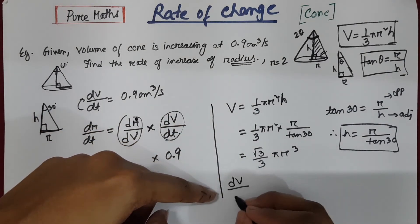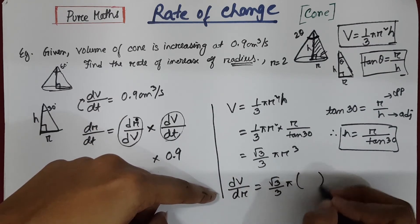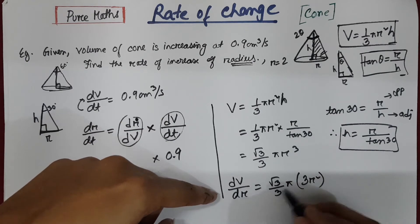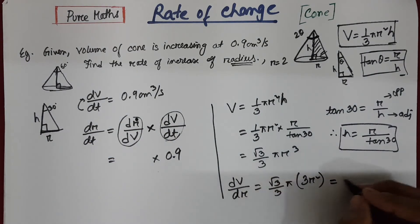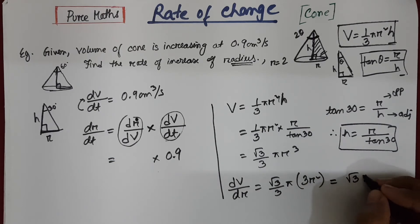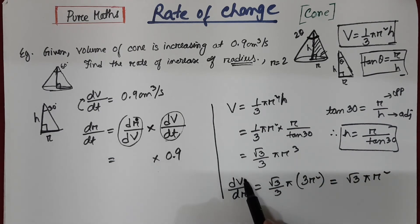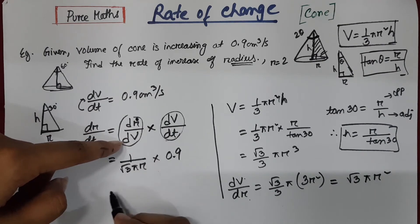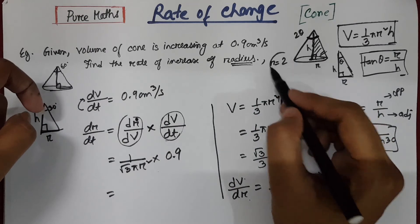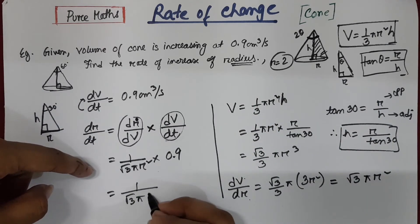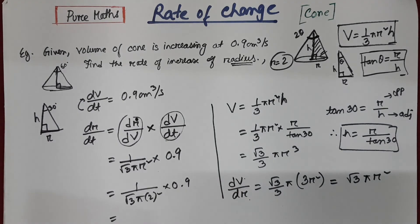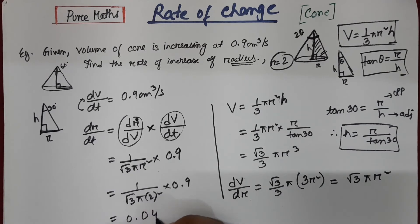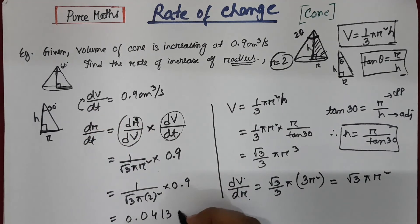So if we differentiate this, dV by dr, r cube will become 3 r square. After canceling out the 3, the value for dV by dr will become root 3 pi r square. But we need dr by dV, so take the reciprocal. Since radius is 2, so root 3 pi times 2 square times 0.9. So 0.9 divided by root 3 times pi times 4. This is 0.0413 centimeters per second.